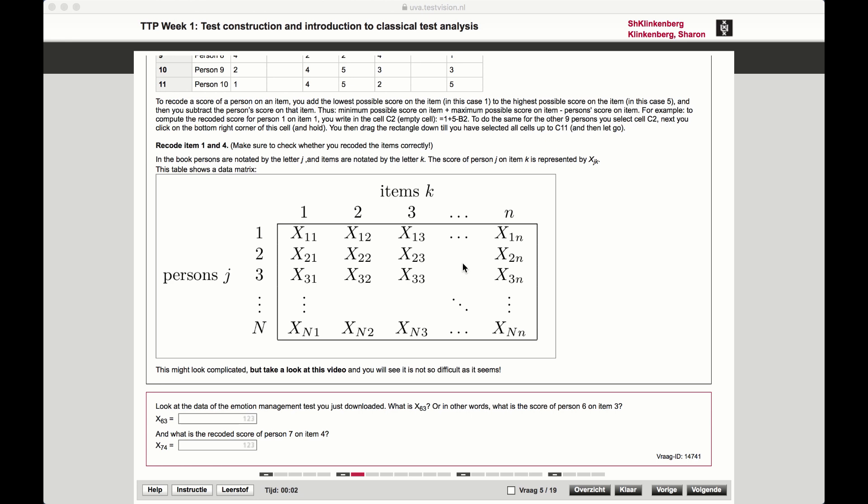So in this video, we're going to briefly look at the notation of the item by persons matrix. As you can see here, we've replicated that matrix, where we have the scores indicated by an X for some specific person J and item K.